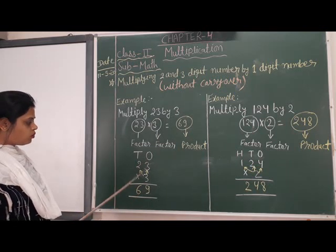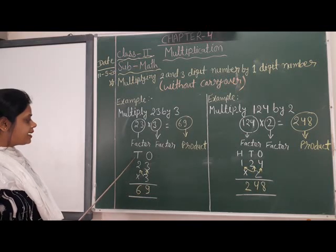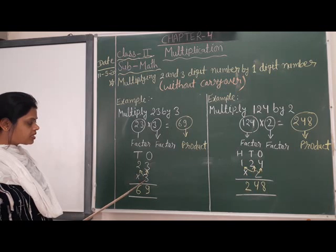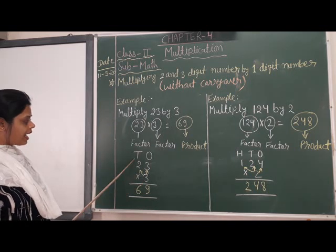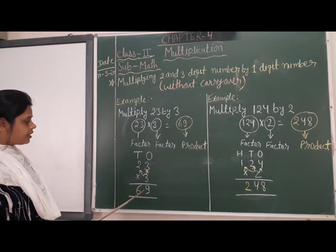Then multiply 10s column by 3 and write the answer under 10s column.